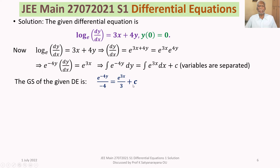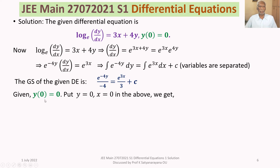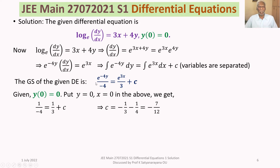To evaluate the arbitrary constant c, we use the initial condition y(0) = 0, meaning y = 0 when x = 0. Substituting y = 0 and x = 0, we get 1/(−4) = 1/3 + c, since e^(−4·0) = 1 and e^(3·0) = 1.